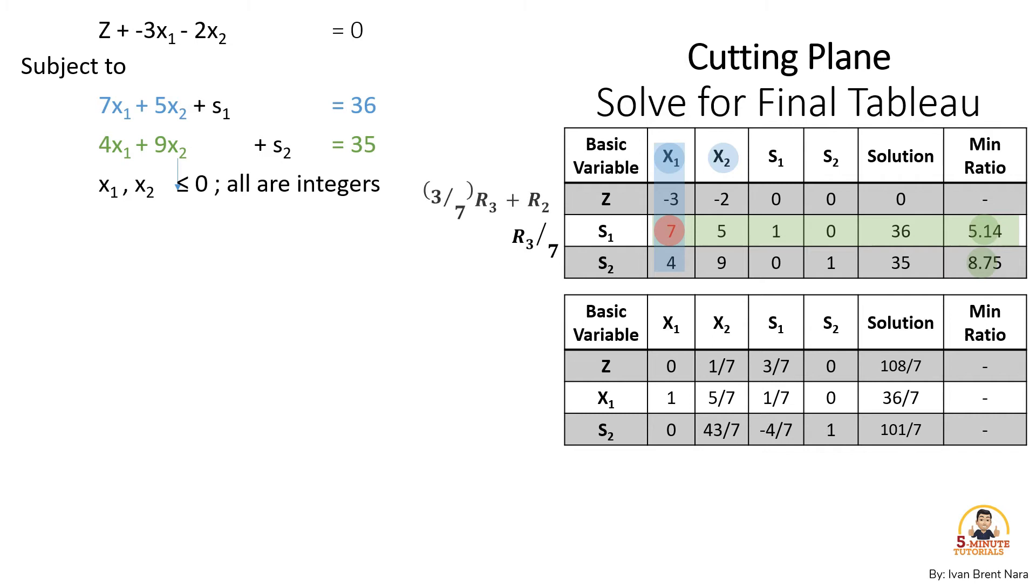Let's proceed to row 2. It's positive 3 divided by 7. Multiply the corresponding value for row 3 plus corresponding value in row 2.